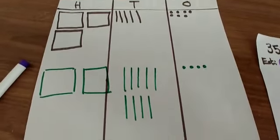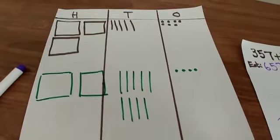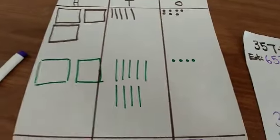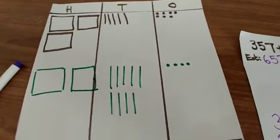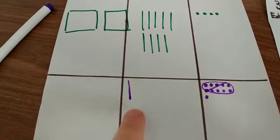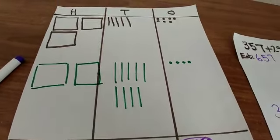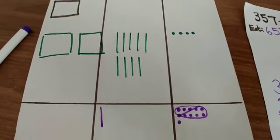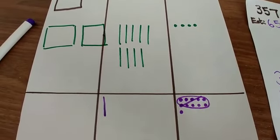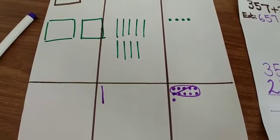So now we're ready to move on to our 10s column, which gives me 5 10s add 9 10s. But I must remember I've got this 10 down here that I need to add. So I'm actually going to do 5 add 9, which makes 14. And add my extra 10, which makes 15. And I'm going to show you what that looks like.